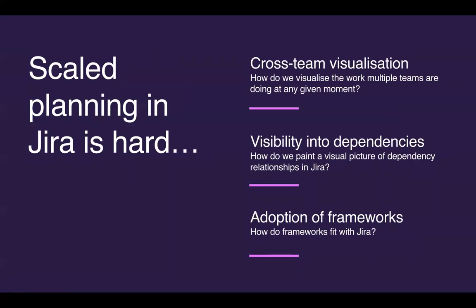The first was cross-team visibility. The companies we were talking to were very interested in visualizing the work that multiple teams were doing at any given moment. Next, and probably the most prominent theme, was the importance of understanding cross-team dependencies to the success or failure of a program or project. Our customers told us it was really difficult for those dependency relationships to be visualized and surfaced in JIRA.